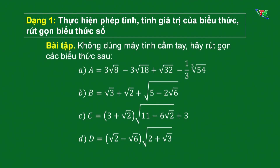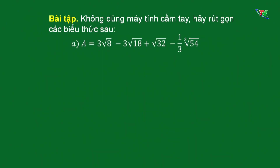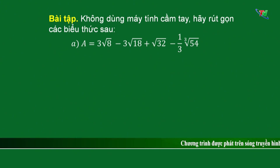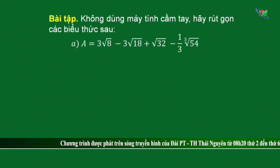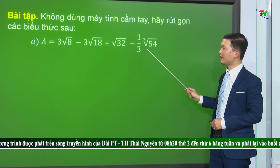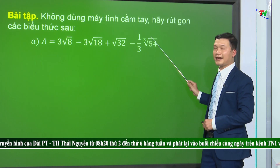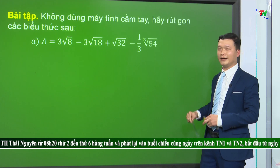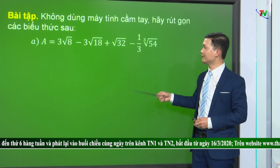Chúng ta sẽ quan tâm bài tập. Đề bài không dùng máy tính cầm tay, hãy rút gọn các biểu thức. Thầy cho 4 biểu thức với các cấp độ khó khác nhau. Đề bài là không dùng máy tính, có nghĩa là các em cần phải dùng các phép biến đổi lần lượt từng bước để đưa ra được kết quả chính xác. Chúng ta sẽ giải quyết ý A. Biểu thức A gồm có 3 hạng tử chứa căn bậc 2 và 1 hạng tử chứa căn bậc 3. Các hạng tử này không thể khai căn được trực tiếp.